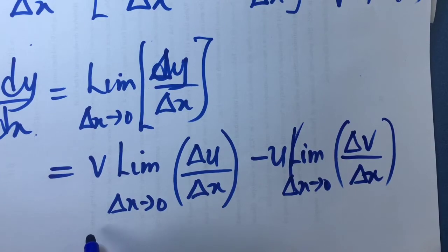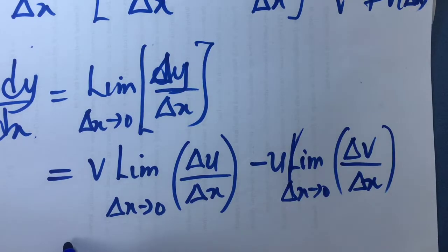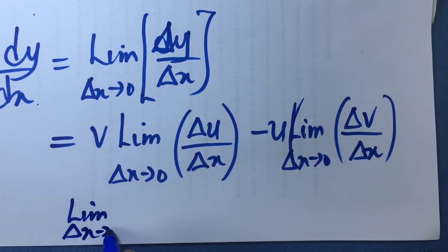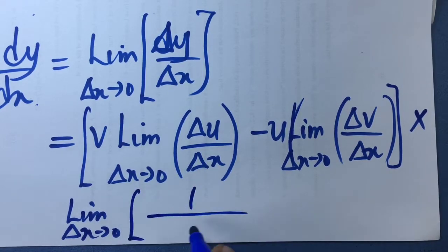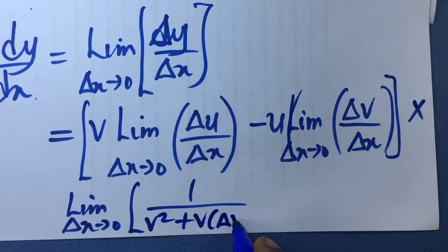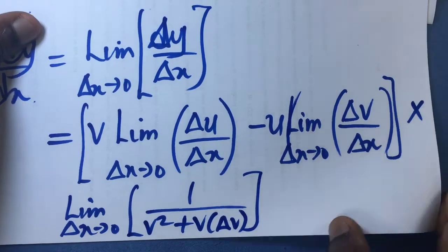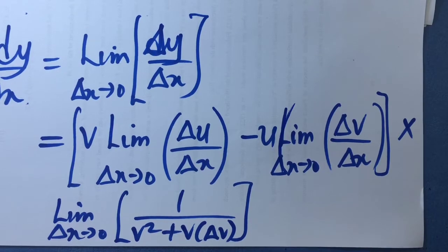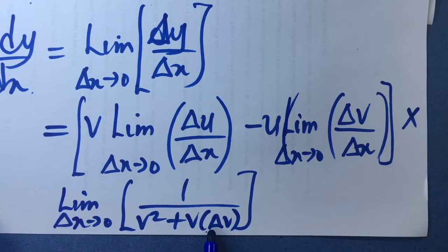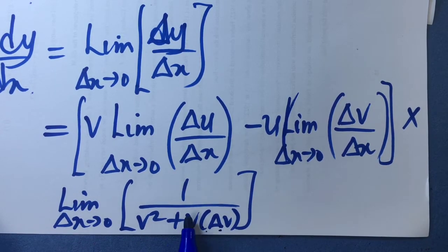Finally, we take the limit as delta x tends to 0 of 1 over v squared plus v·delta v. As delta x tends to 0, since u is dependent on x, v is dependent on x, and y is also dependent on x, delta u and delta v will also tend to 0. So in the term with v·delta v, as delta x tends to 0, delta v becomes 0, meaning 0 times v gives 0, and we are left with 1 over v squared.